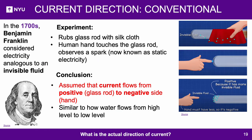Current direction — Conventional: In the 1700s, Benjamin Franklin considered electricity analogous to an invisible fluid. It was assumed the glass rod had excess of this invisible fluid, and transfer of this fluid to an object in contact — a human hand — was what is now known as static electricity. Therefore, it was wrongly assumed that current flows from positive (glass rod) to negative (human hand), analogous to how water flows from high level to low level.